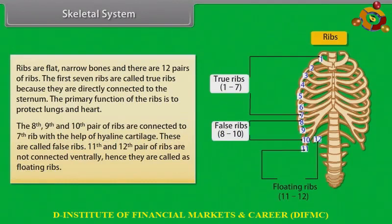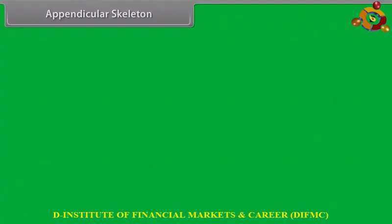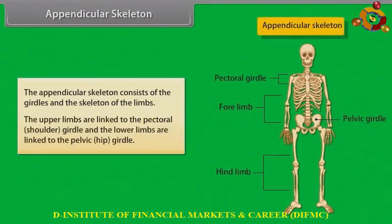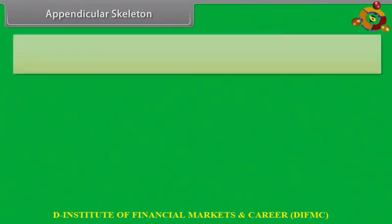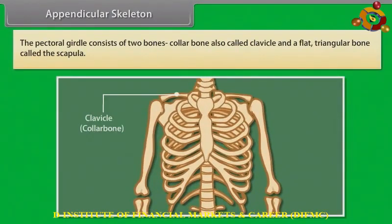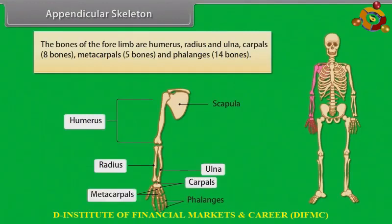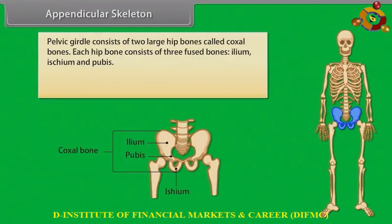The eighth, ninth, and tenth pairs of ribs are connected to the seventh rib with the help of hyaline cartilage; these are called false ribs. The collar bone, also called the clavicle, and a flat triangular bone called the scapula form part of the appendicular skeleton. The bones of the forelimb are the humerus, radius, and ulna, carpals (eight bones), metacarpals (five bones), and phalanges (fourteen bones).